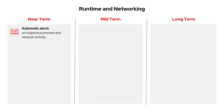On to runtime and networking, where we're enhancing our suspicious process detection to provide automatic alerts without manual intervention. Users will be notified as soon as processes deviate from the baseline, without needing to lock in the baseline first. To avoid alert fatigue, these policies will be disabled by default, giving customers the choice to enable them if they want to receive notifications.